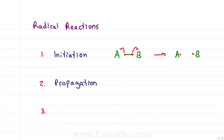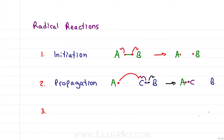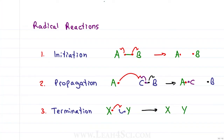Step two, the most common step, is propagation — where one radical will attack a non-radical in a chain reaction, giving us a brand new radical. The last step, termination, is quite uncommon — this is where two radicals come together to form a bond, making the radicals disappear.